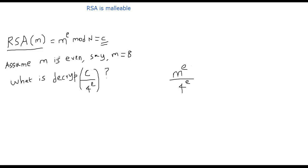But I already mentioned m is an even number. Say, I assume m is 8. In this case, it becomes 8 power e by 4 power e, which is nothing but just 2 power e.